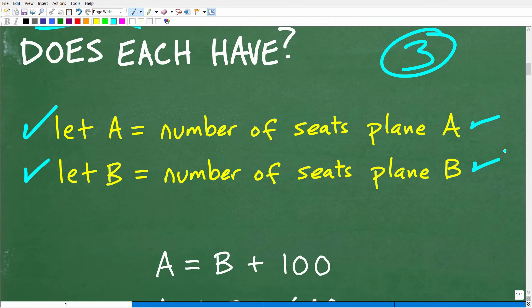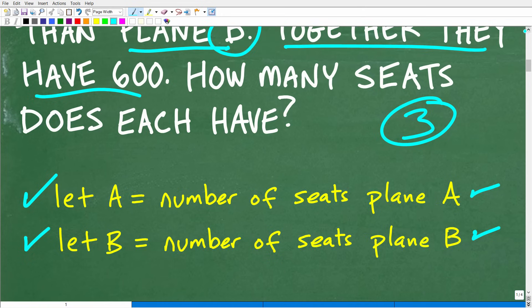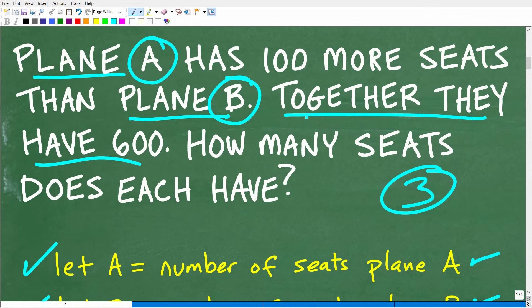This is the hopefully obvious setup for those of you out there that are familiar with algebra and these problems. Now what we're going to have to do here is we have two variables, so we're going to have to build two equations. Now how do we build those equations? We're going to have to come over here and use the information in the problem. So this first part of the problem, Plane A has 100 more seats than Plane B, this is going to allow us to build one equation. And then together they have 600 seats is going to allow us to build two equations.